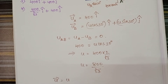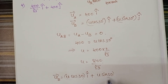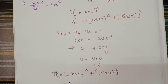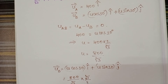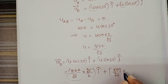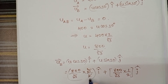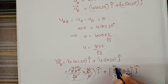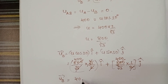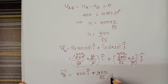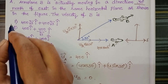Now the velocity of B is: U cos30 î + U sin30 ĵ = (800/√3)(√3/2) î + (800/√3)(1/2) ĵ = 400 î + (400/√3) ĵ. So the velocity of B equals 400 î + (400/√3) ĵ km per hour. Checking the given options, the second option is correct.